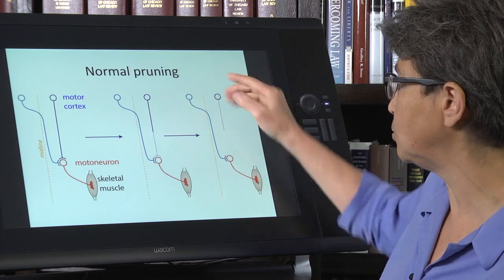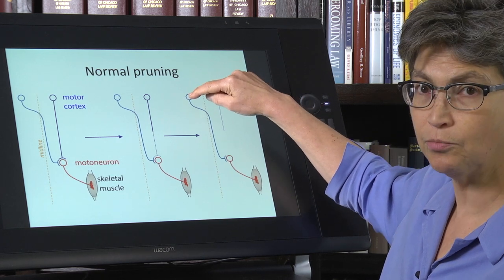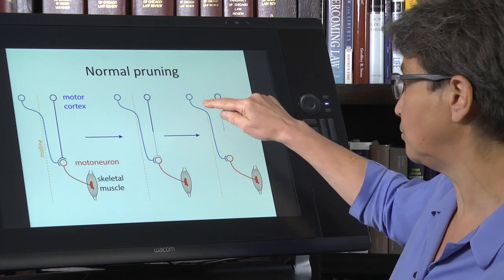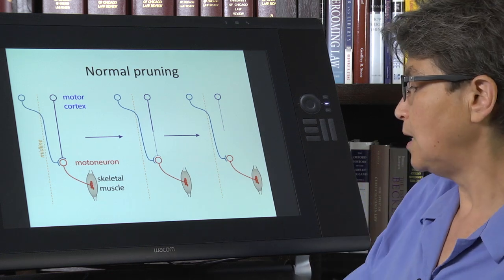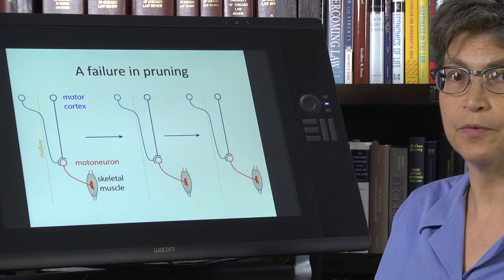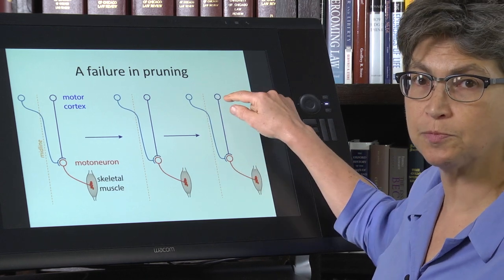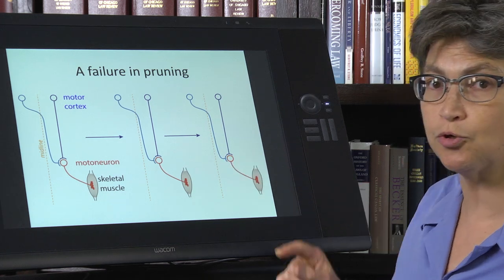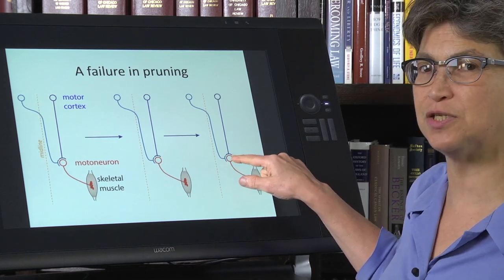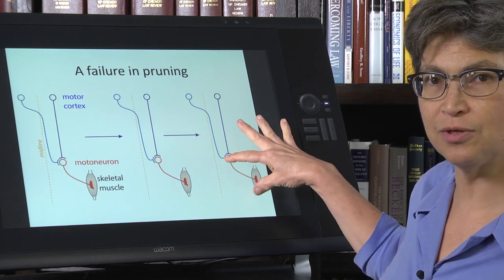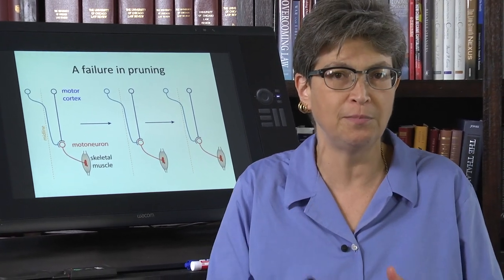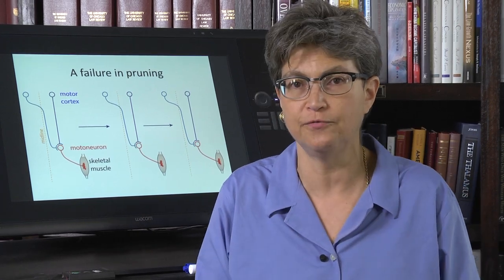In the healthy adult, only the contralateral motor cortex innervates motor neurons. In this proposed mechanism of cerebral palsy, the pruning doesn't occur. So in the adult with CP, there are two signals provided to the motor neuron. And it's not just that there are two signals — this produces changes both in the motor neuron and even in the muscle. This is thought to be the fundamental problem in a large number of spastic cerebral palsy cases.